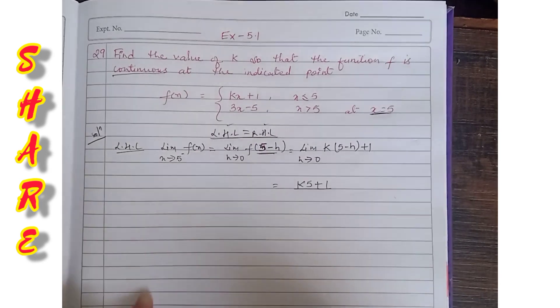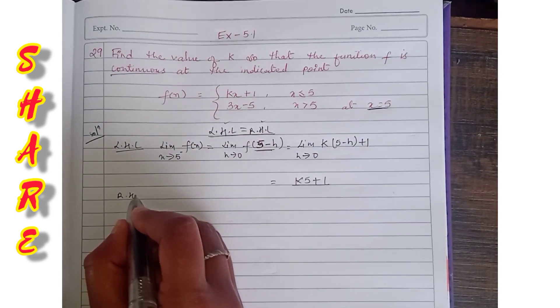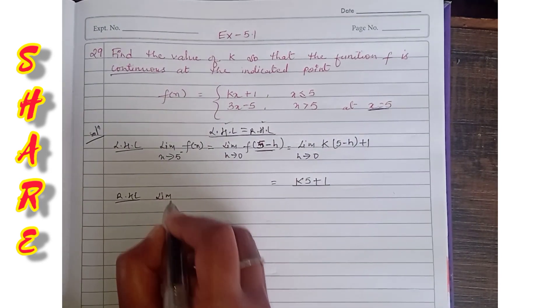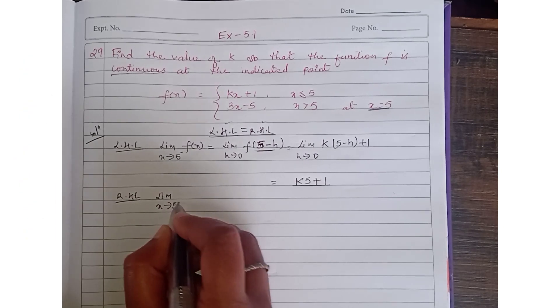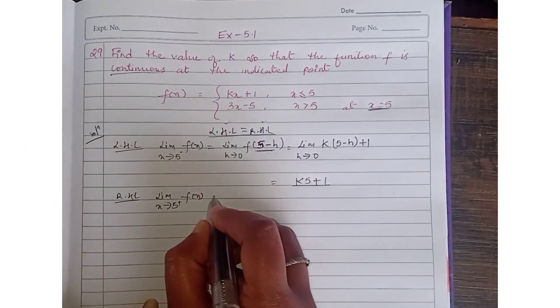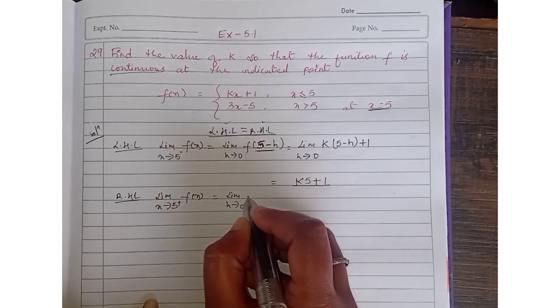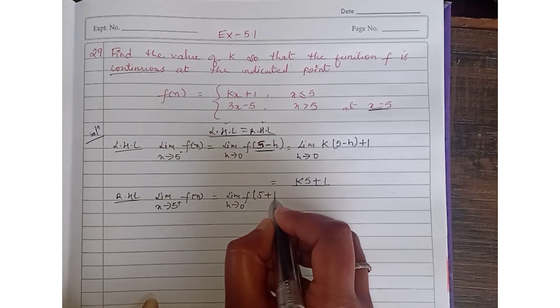Now, right hand limit. Limit x tends to 5 plus, f(x). Now limit h tends to 0, f(5 plus h).